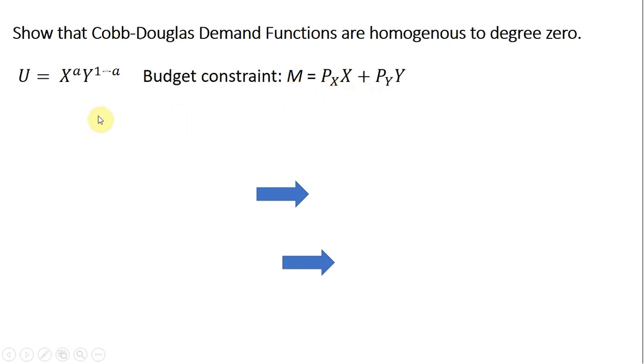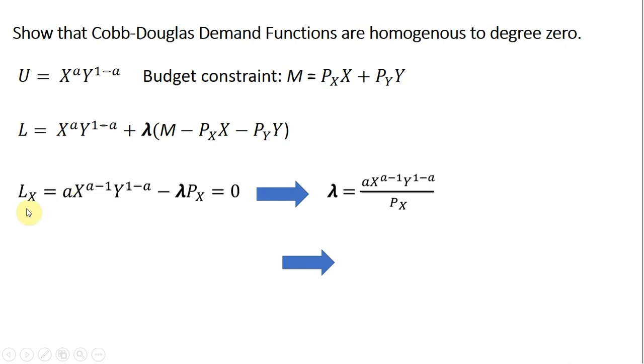I'll set up a Lagrangian to maximize utility subject to the constraint. We'll start with three partial derivatives. Here's a partial derivative of the Lagrangian with respect to good X. Bring down the A in front here, and then A minus 1 leaves this result. And since lambda is being multiplied by minus the price of good X times X, the rest of the partial derivative will leave us with this.